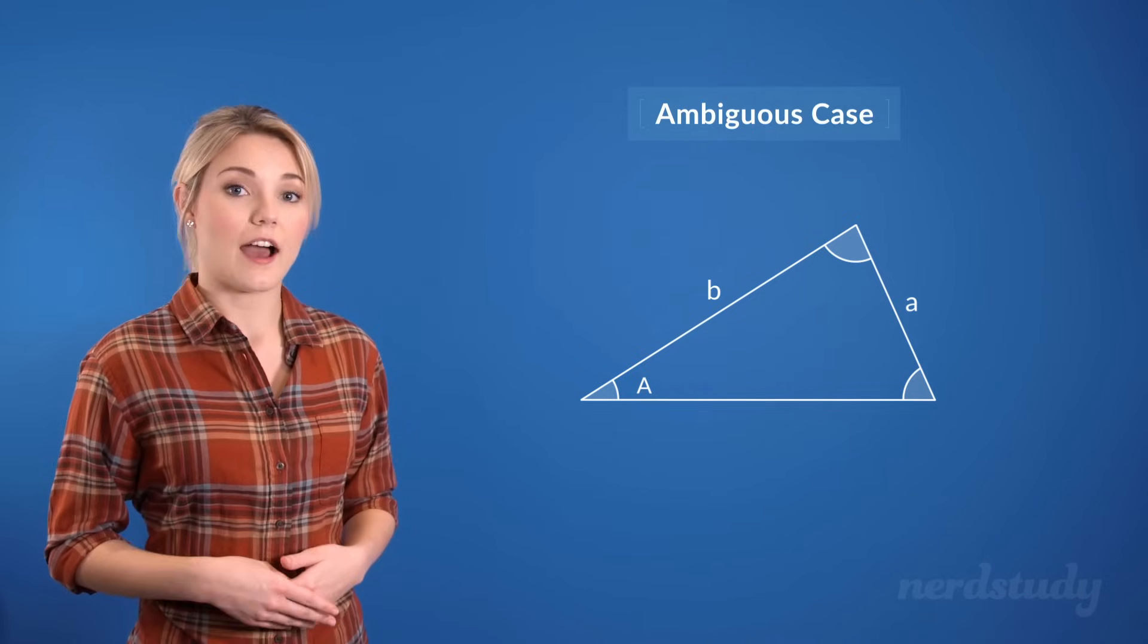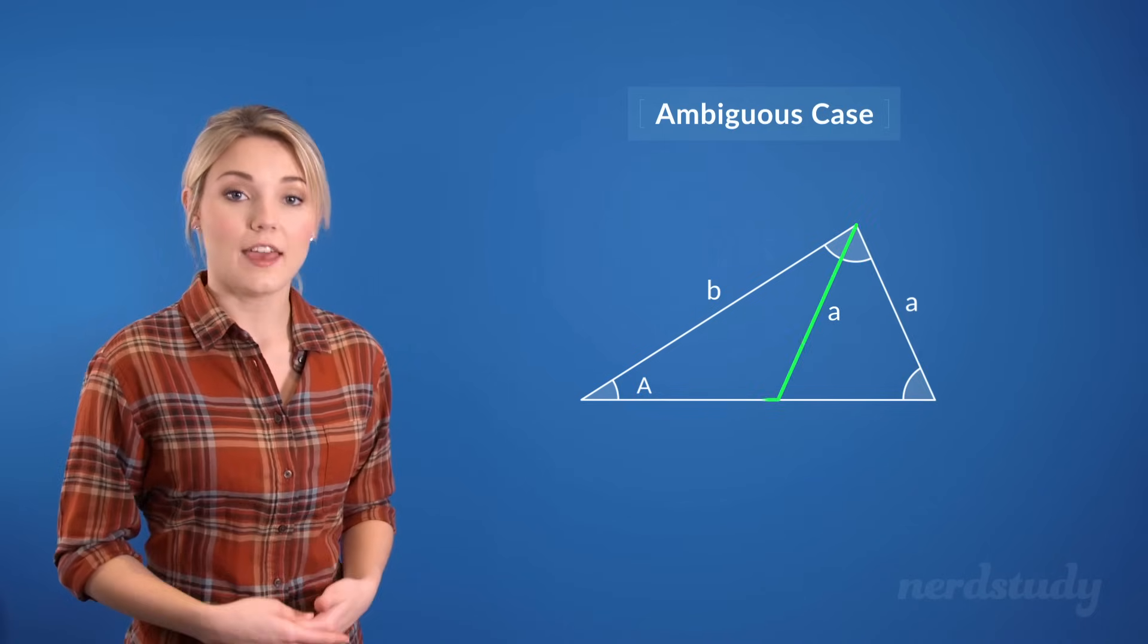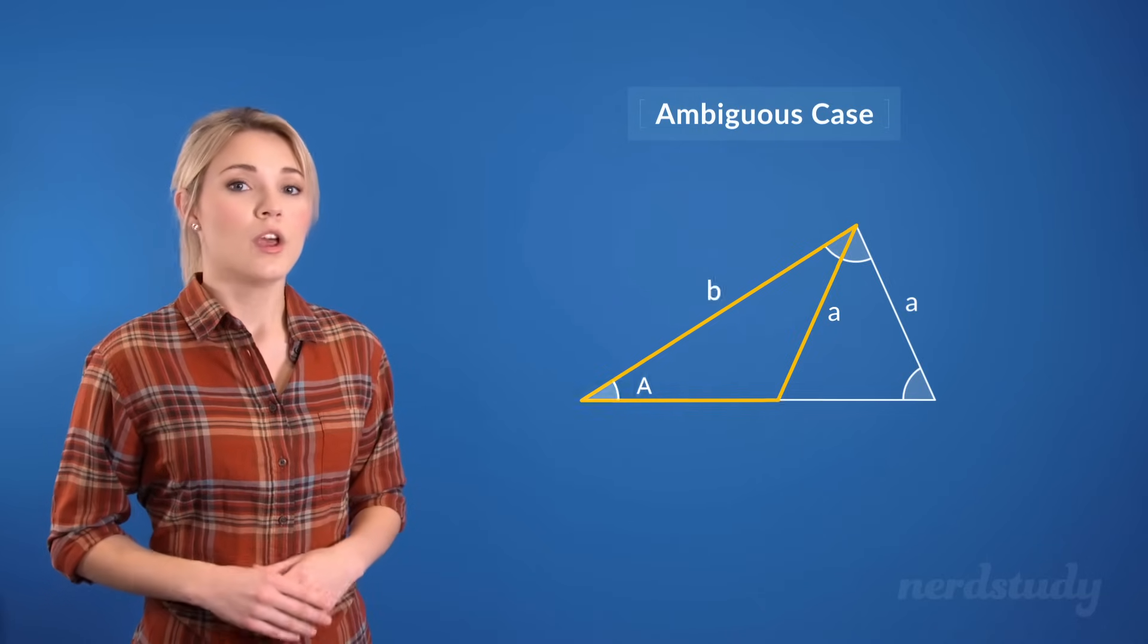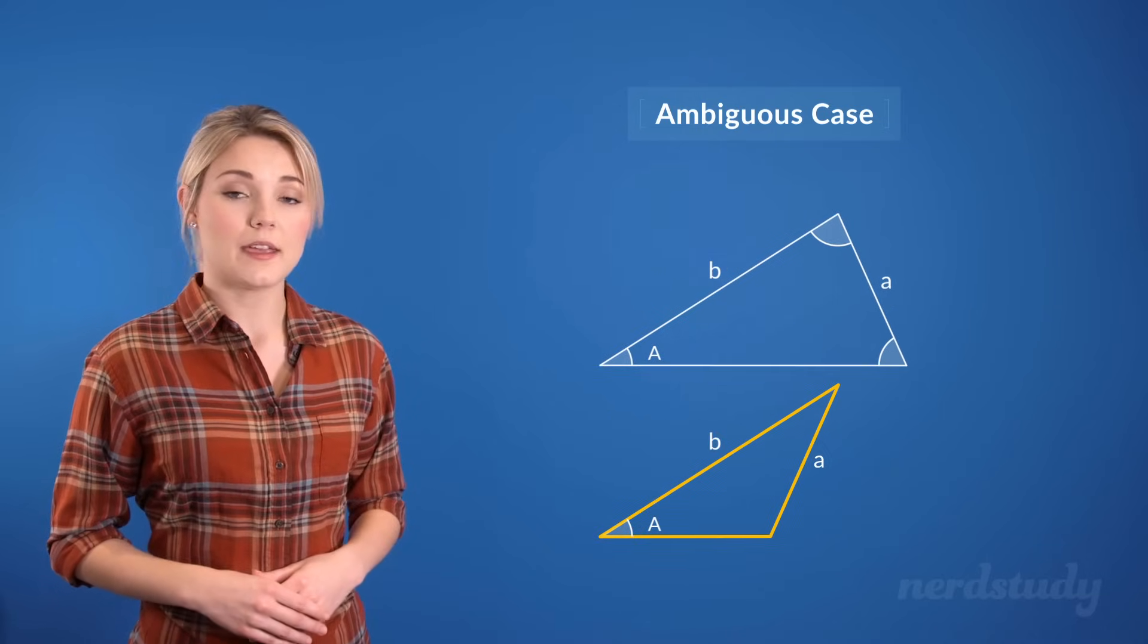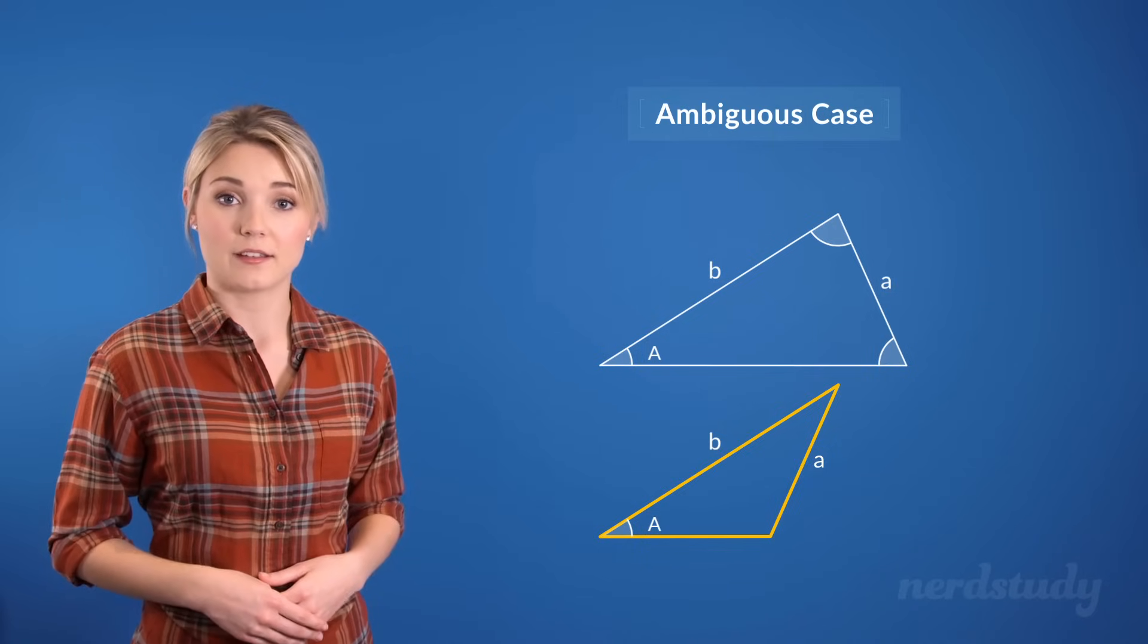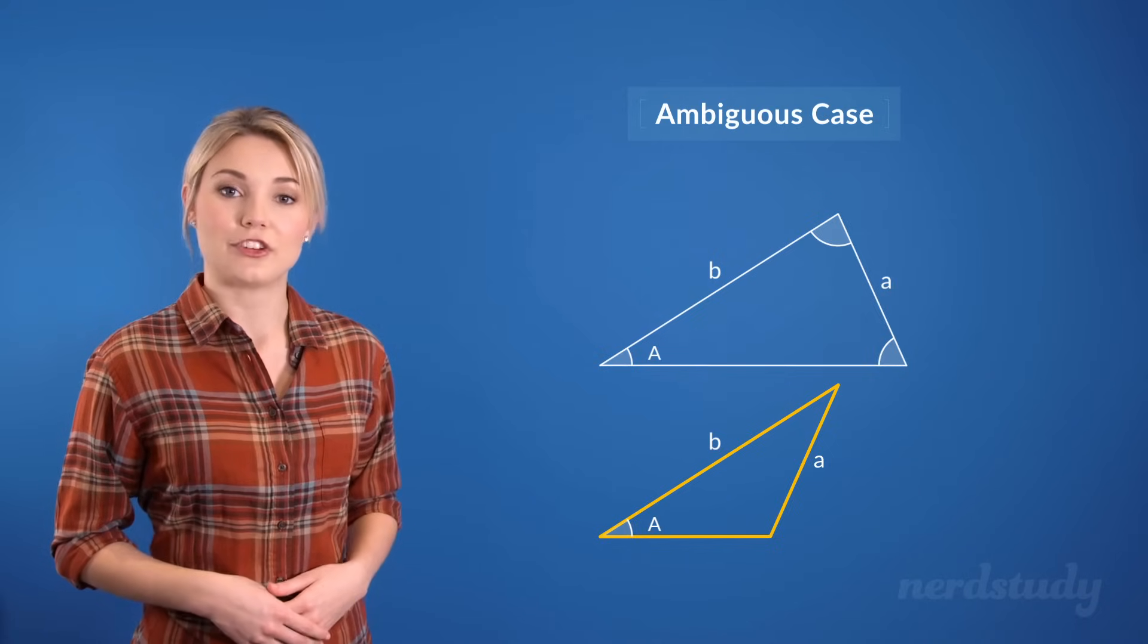This is when it is possible to either have this length drawn like this to make a triangle, or drawn like this to become a completely different triangle. Notice how both triangles still maintain the values of every side and angle that we were required to respect. So let's learn how to solve a problem when we're given a situation like this.